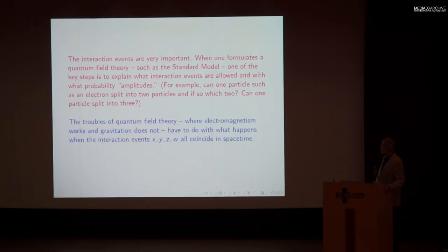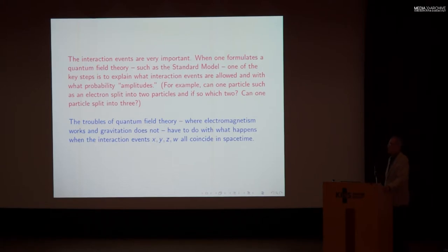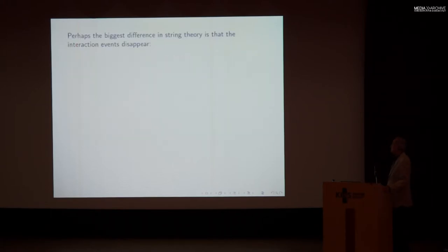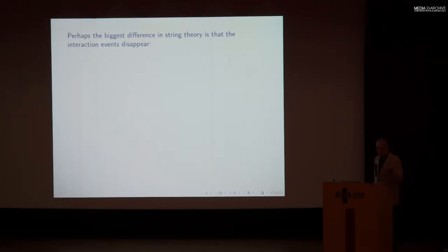The troubles of quantum field theory — where electricity works and gravity does not — have to do with what happens when the interaction events all coincide in spacetime. Perhaps the biggest difference from the standard quantum field theory framework to string theory is that in string theory, the interaction events disappear.